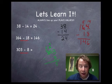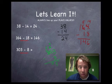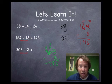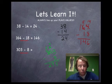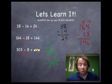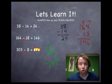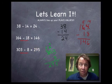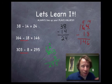What's 9 minus 0? That's an easy one — 9. And 2 minus 0 is 2. So 303 minus 8 equals 295.